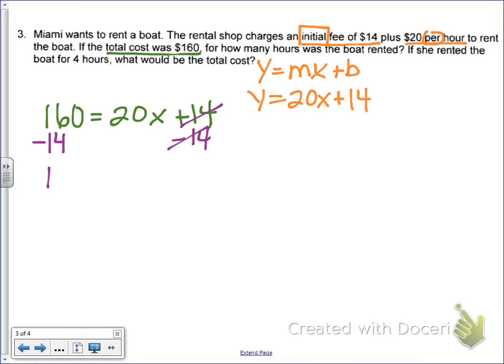160 minus 14 gives me 146. Excuse me, 146 equals 20x. And then to get x by itself, we divide by 20. And that's going to give me x equals 146 divided by 20. I need a calculator for that.